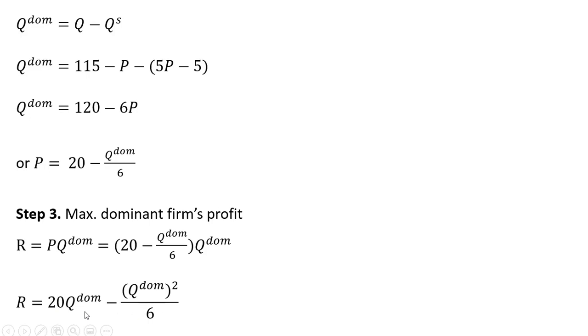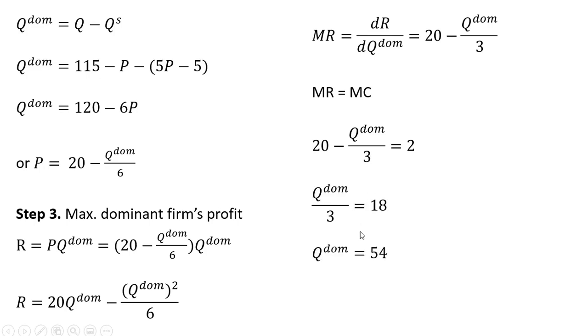Now we can take the derivative of this revenue function with respect to the dominant firm's output. And now we'll set marginal revenue equal to marginal cost. The marginal cost of the dominant firm was given as two. So we're going to solve for quantity. And the dominant firm will maximize profit by producing 54 units. And the price, we'll plug this 54 units back into this price equation to get a profit maximizing price of $11.